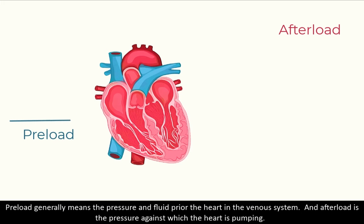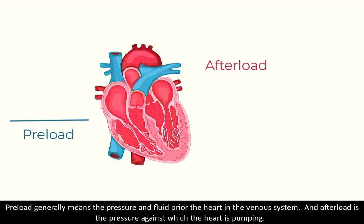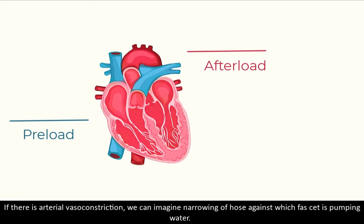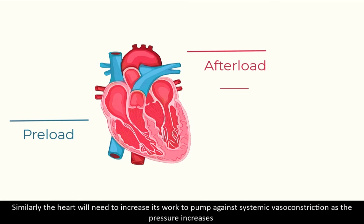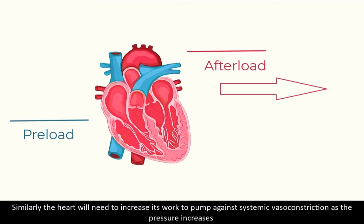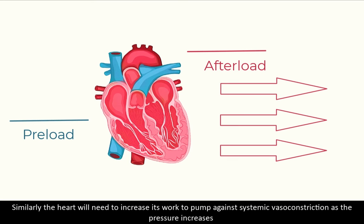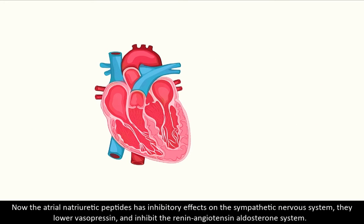To understand these effects, we need to know what is known as preload and afterload. Preload generally means the pressure and fluid prior to the heart in the venous system, and afterload is the pressure against which the heart is pumping. If there is arterial vasoconstriction, we can imagine narrowing of a hose against which a faucet is pumping water. Similarly, the heart will need to increase its work to pump against systemic vasoconstriction as the pressure increases.